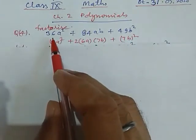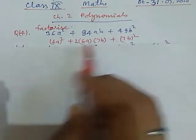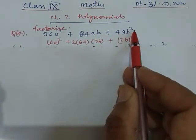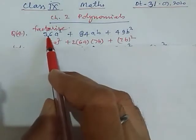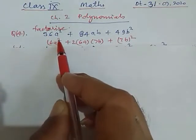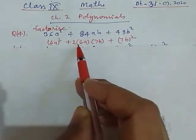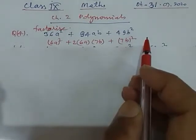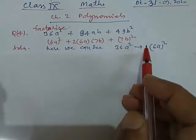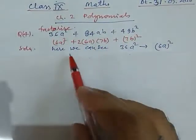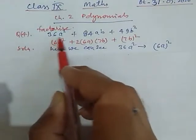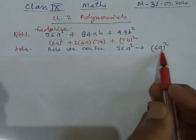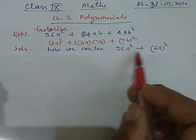Now here we try to convert this into this form. So, 36a squared plus 84ab plus 49b squared. Now we can write 36a squared as 6a whole square, because 6a into 6a is 36a squared.